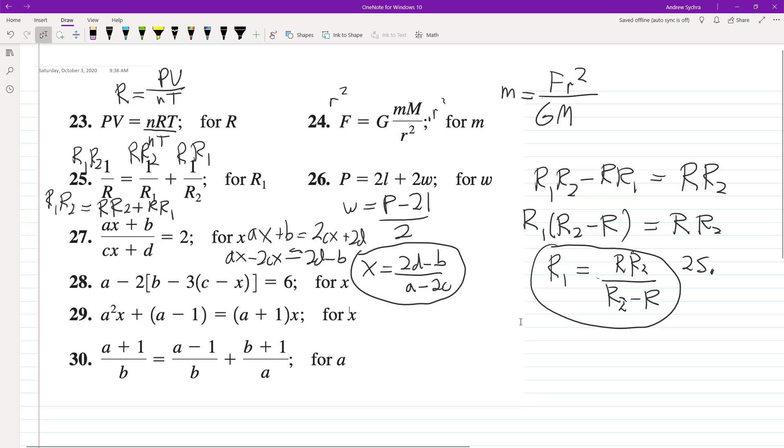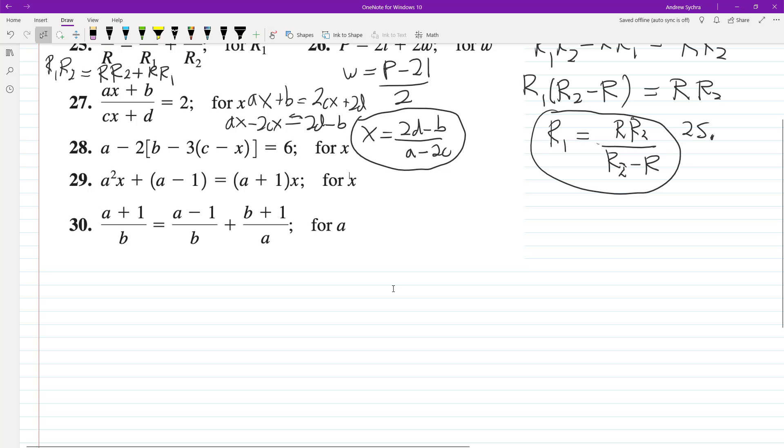All right, 28. These are just a little bit more complicated. So we're solving for X. So just distribute slowly. So A minus 2B plus, because you distribute the minus 2, the minus sign also. A minus 2B plus 6C minus, just got to be careful about that, 6X equals 6. All right.